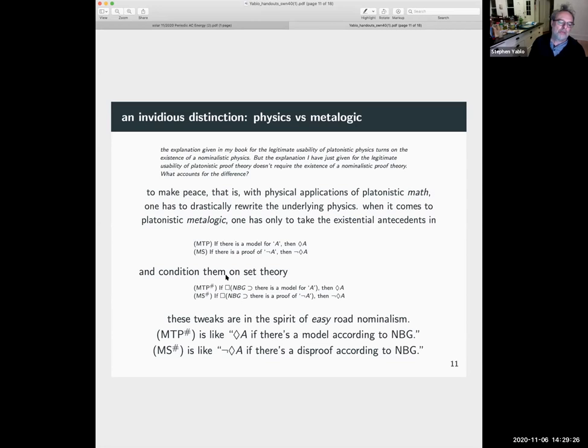So MTP sharp is, if necessarily given uses MBG because it's a funnily axiomatized set theory, if MBG then there's a model for A, then it's possible that A. If again this basically means it follows from MBG that there is a proof of not A, then it's not possible that A. And these tweaks are very much in the spirit of easy road nominalism.